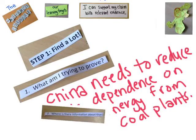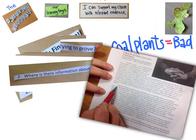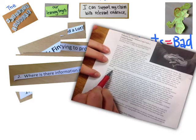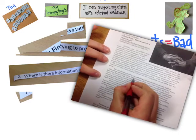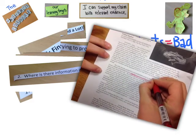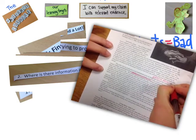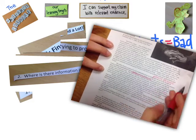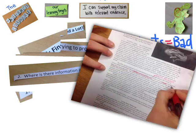Now that Carol remembers what she's trying to prove, she needs to figure out where there is information about her claim — where is there information showing coal plants are bad. Luckily, Carol has a phenomenal reading about coal plants in China. So Carol is going to go through the reading, reread it closely, and mark anything in the text she thinks will help her support her claim. She's also going to write briefly on the side how she thinks it will help support her claim — why does it show that coal plants are bad? For example, she reads through and notices that coal plants and combustion pose an immediate threat to health.